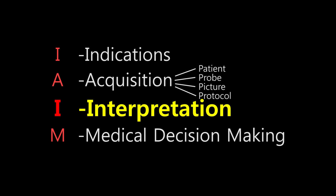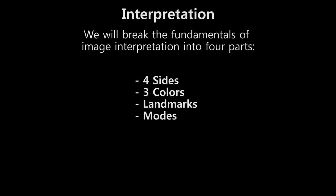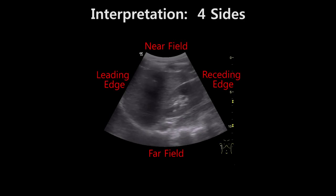The second I in IAIM stands for Interpretation. A systematic approach is required to accurately interpret images. It will take time to master the relevant anatomy and feel comfortable with the appearance of the wide range of structures imaged on ultrasound. There are four sides to every ultrasound image: near field, far field, leading edge, and receding edge. The near field is the top of the screen and represents structures closest to the probe. The far field is at the bottom of the screen and represents structures most distant from the probe. The depth of the image can be changed using the depth knob.